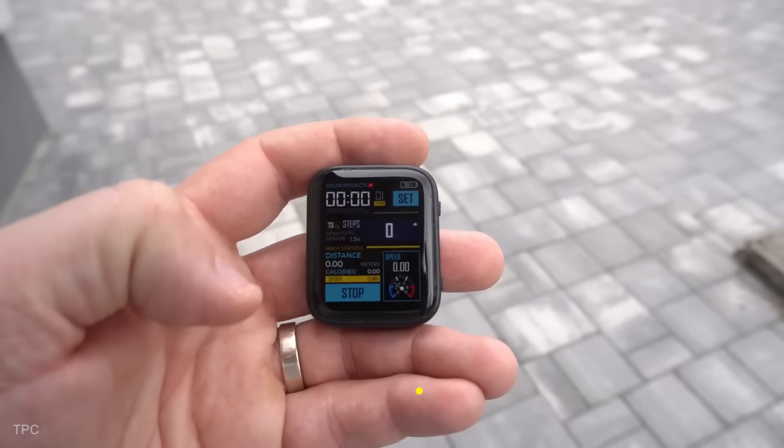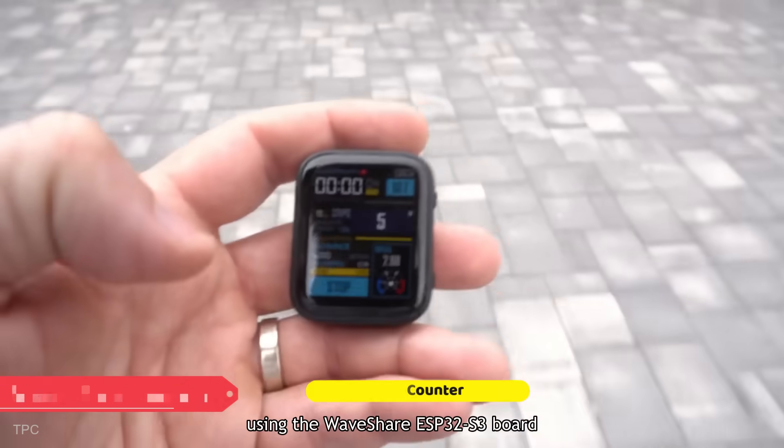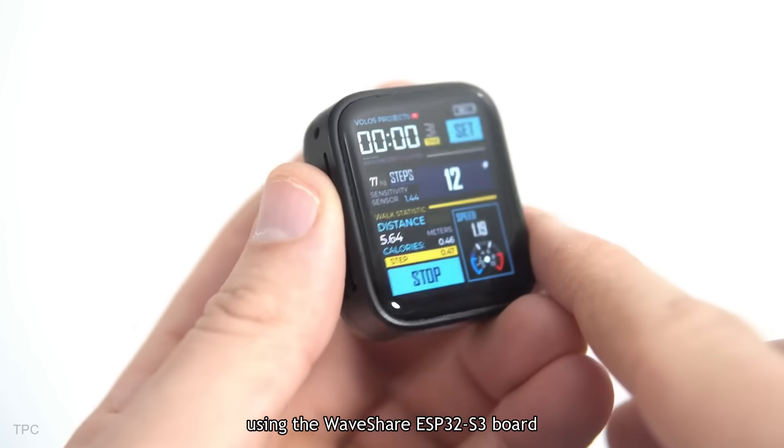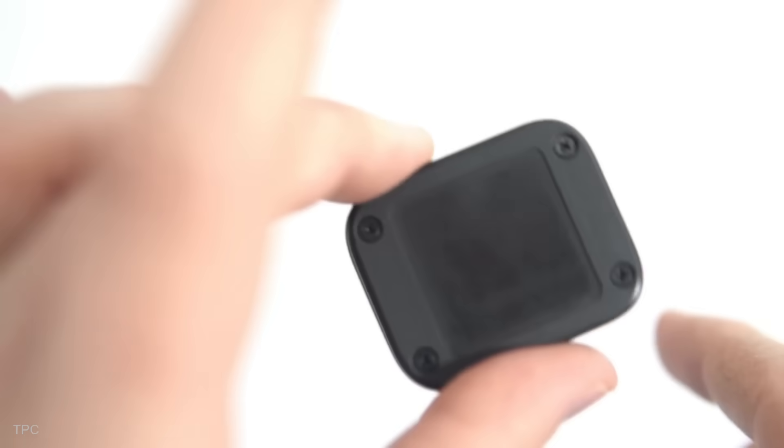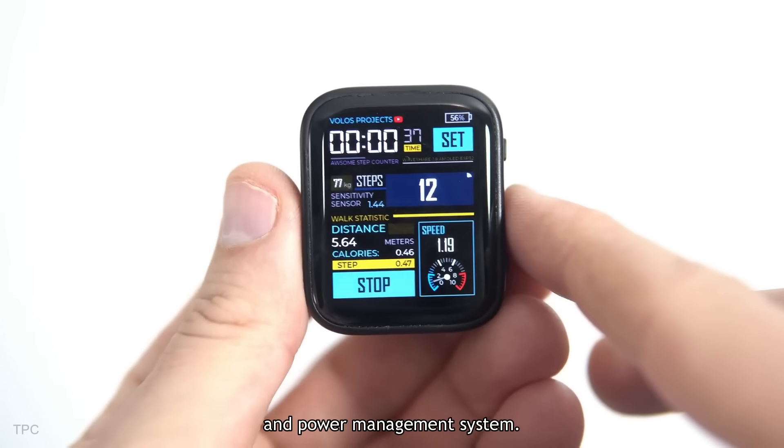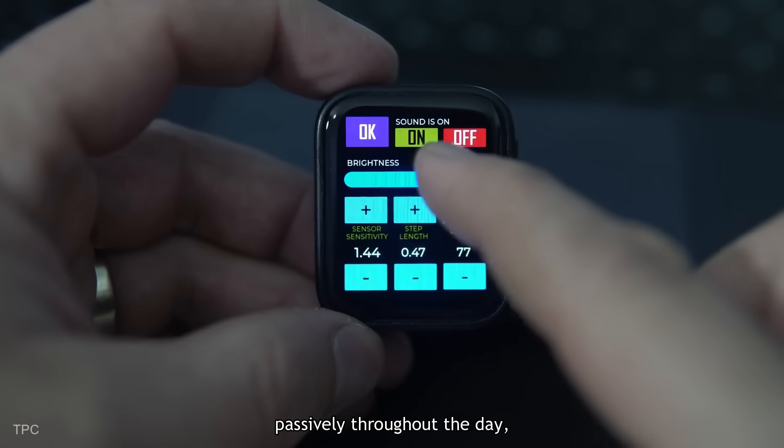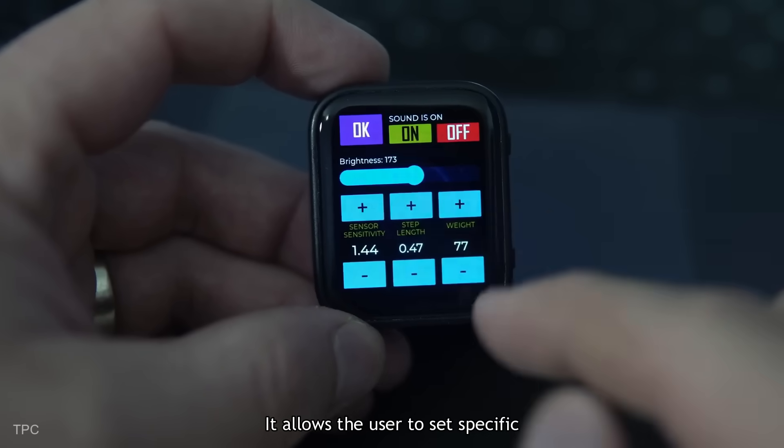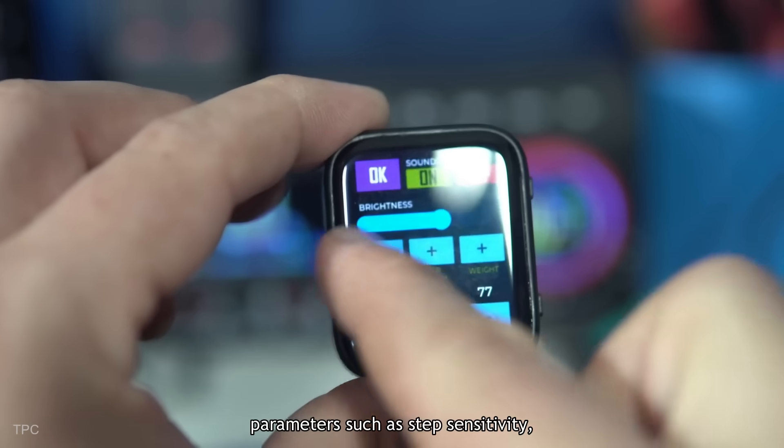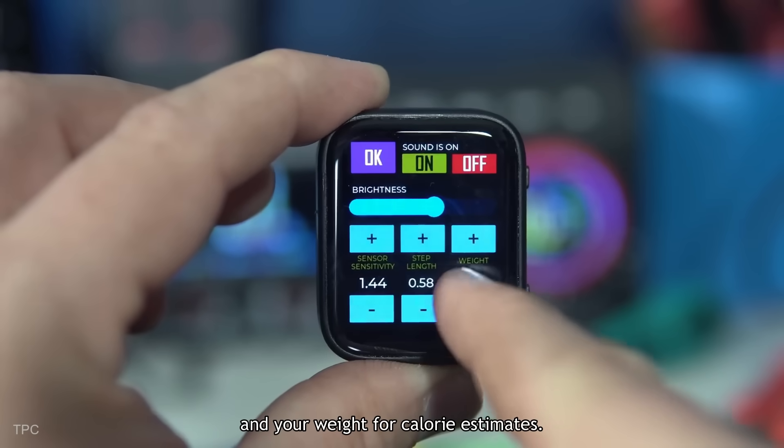Number 4. This project is a DIY step counter designed using the Waveshare ESP32-S3 board with a 1.8-inch touchscreen, speaker, battery, accelerometer, and power management system. Unlike a smartwatch that tracks steps passively throughout the day, this project takes things to the next level. It allows the user to set specific parameters such as step sensitivity, step length for accurate distance, and your weight-for-calorie estimates.